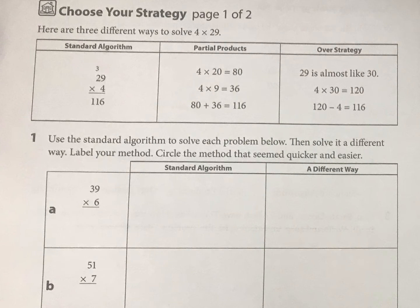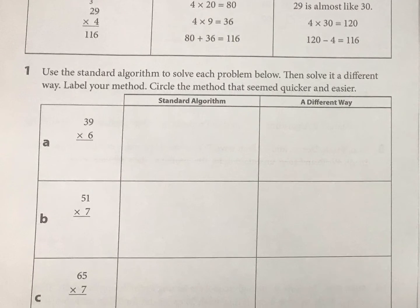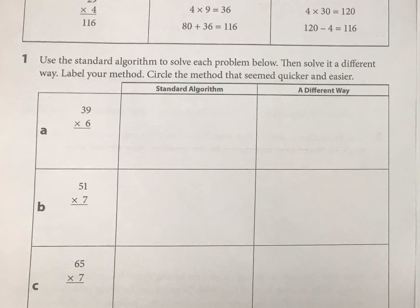And what we're going to do here is do the standard algorithm for multiplication and then do it a different way and then choose which one is maybe quicker or easier, or maybe which one do you prefer.